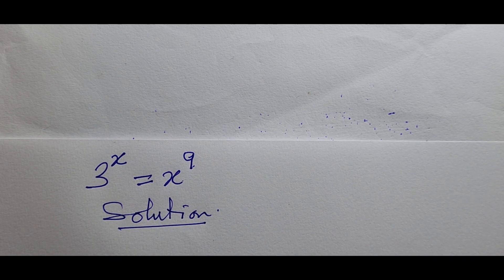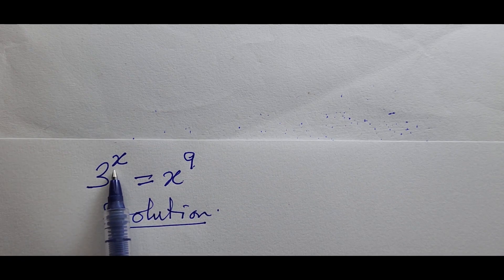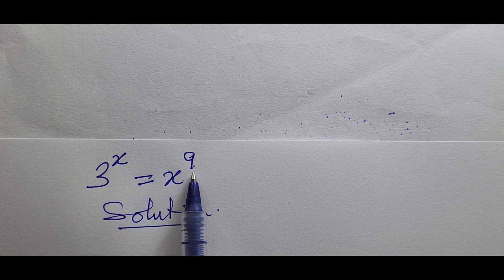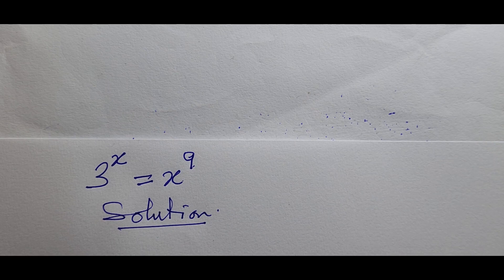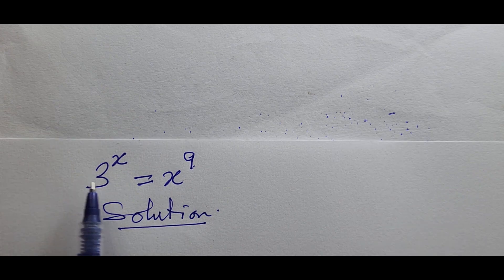I'll show this trick as I have in some of my videos. What we want to do here is eliminate x as a power and also eliminate nine as a power at the same time. To achieve that, we multiply the two powers together, find the reciprocal of the result, and raise both powers to that answer.